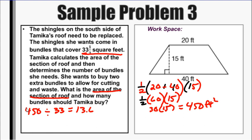But you can't have a partial bundle. So we would have to round that up to the next bundle, which would be fourteen bundles. So she needs fourteen bundles. But it says she wants to buy two extra bundles. So add two. So that would give us a total of 16 bundles she would have to purchase.